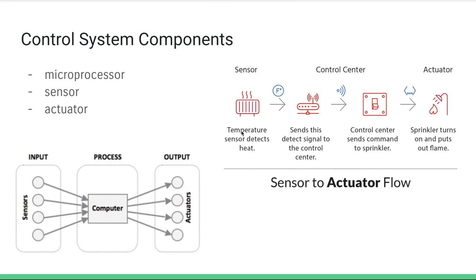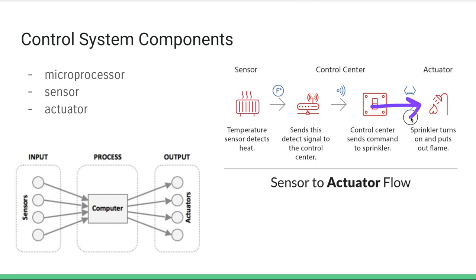A great example, similar to our refrigerator example, is a fire detection system. We have a temperature sensor that detects heat. That sensor sends a signal to our control center, which contains a microprocessor. Based on that signal, the microprocessor outputs a signal to our actuator, and our actuator either outputs water if it's hotter than it should be, or just does nothing. The actuator takes some physical action based on the digital signal fed to it by the microprocessor.